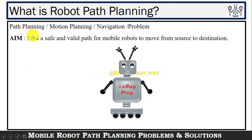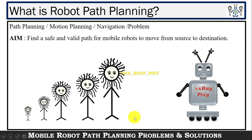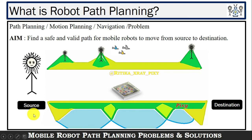Path planning is also known as motion planning or navigation. Our aim is to find the shortest path that is safe and valid for a mobile robot to move from source to destination. In the case of human beings, as humans grow with age they become smarter, their knowledge increases, they learn from experience, and they can face different problems in the environment. But in the case of a robot, we have no age, so we need certain machine learning algorithms for training so they can face the environment. For example, an adult human can easily cross obstacles.